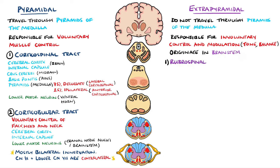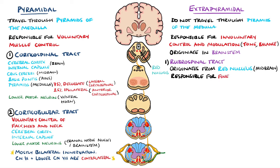The first is the rubrospinal tract, which originates from the red nucleus in the midbrain. These fibres are thought to be responsible for fine motor control, and as these fibres terminate in the cervical and thoracic sections of the spine, they are thought to primarily affect the upper limbs. These have a contralateral innervation.